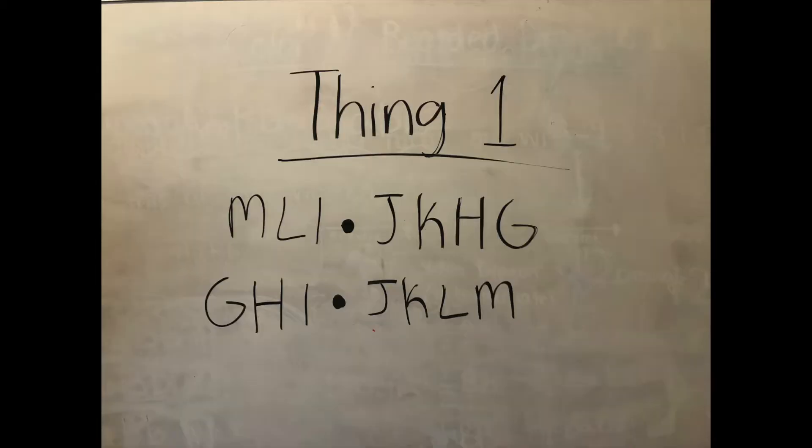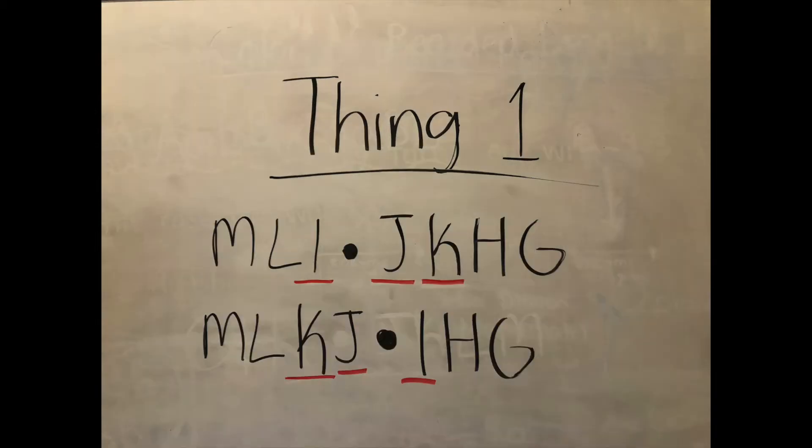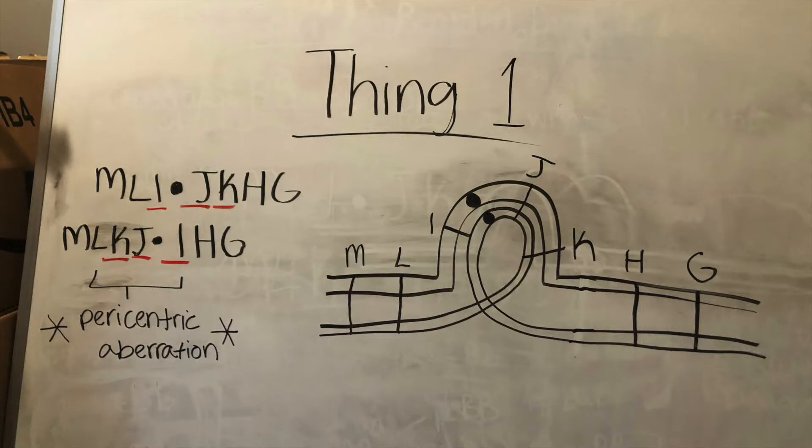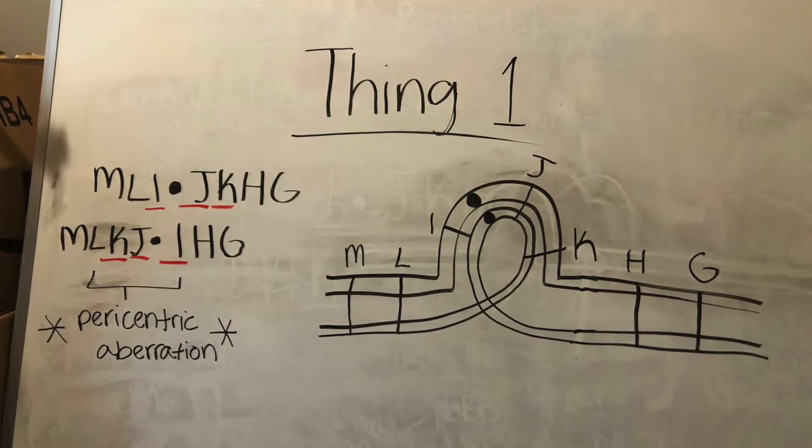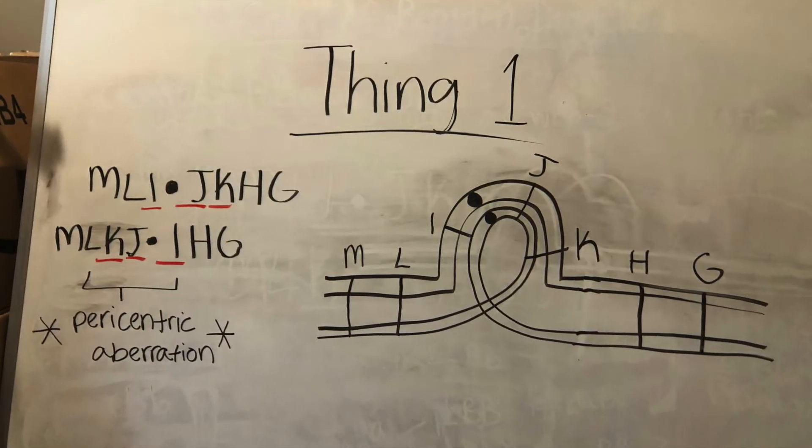We can see that within Thing 1's two chromosomes there is something different. There seems to be some sort of an inversion. If we take a closer look into each chromosome, we can see where they are similar. If we rearrange one of the chromosomes to where the loci match up between both, we can see that the loci K, J, and I are different. The inversion is pericentric because the inverted area I, J, and K includes the centromere.